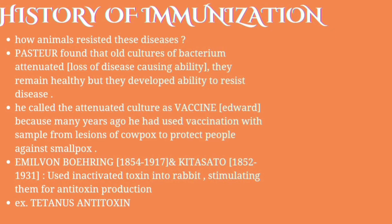Many years earlier, Edward Jenner had used vaccination with samples from lesions of cowpox to protect people against smallpox. Next, Emil von Behring, between 1854 and 1917, and Kitasato, between 1852 and 1931, used inactivated toxin injected into rabbits to stimulate antitoxin production. An example of this antitoxin production is tetanus antitoxin.